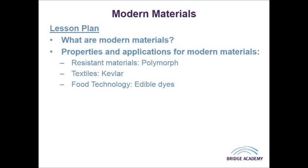Another really interesting modern material is polymorph. Polymorph could be considered a smart material, but it is not. It comes in little grains, a little bit like rice, and is a low melting point polymer. It softens at about 63 degrees, at which point the grains begin to fuse together as one. This makes it an excellent material for rapid prototyping, and if reheated, it can be further manipulated. The reason we don't consider it a smart material is because it doesn't go back to its original form — it will remain fused together unless you apply an additional process.